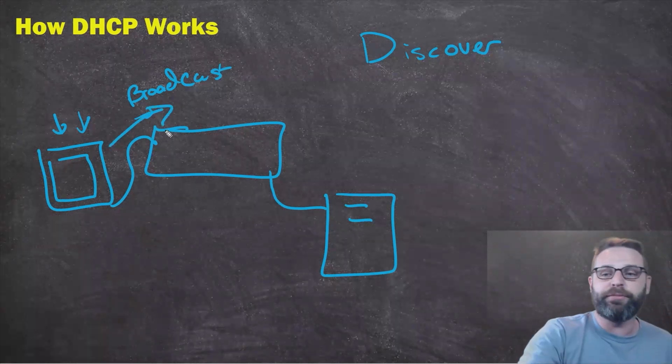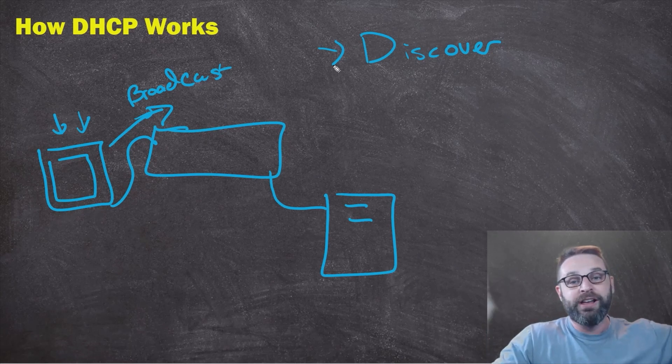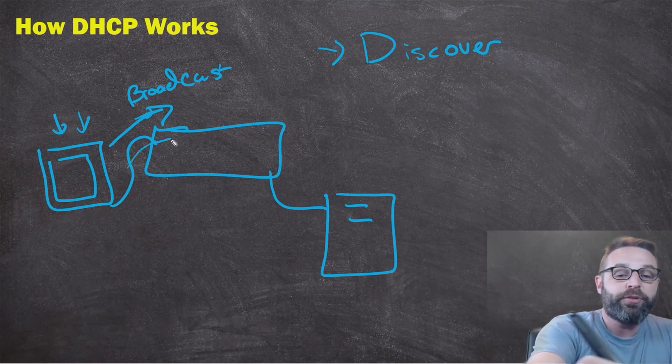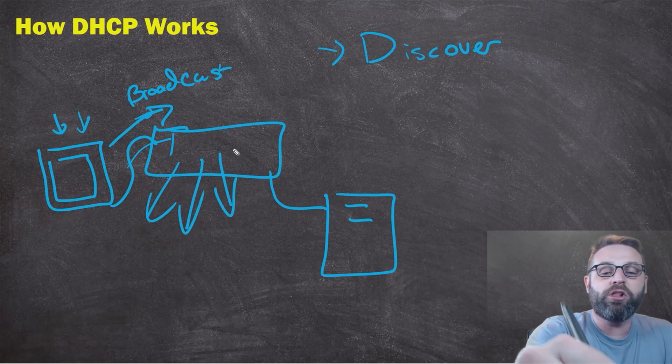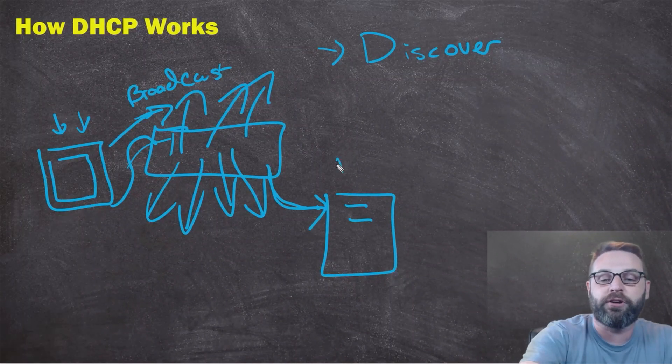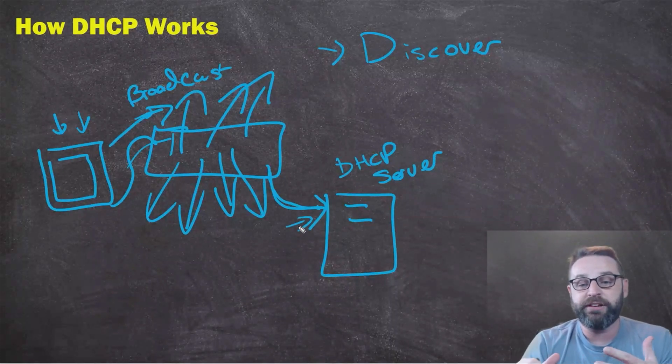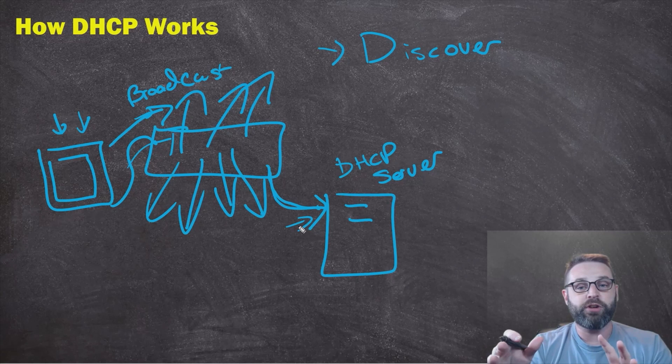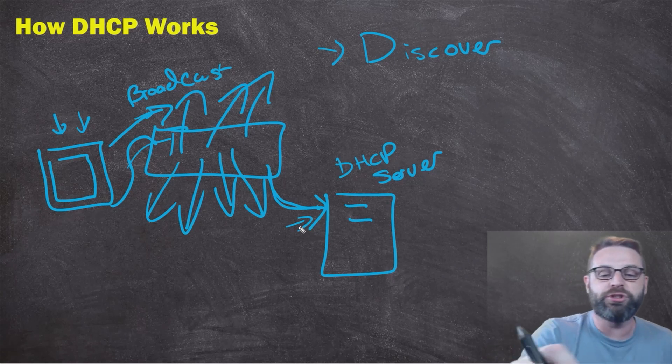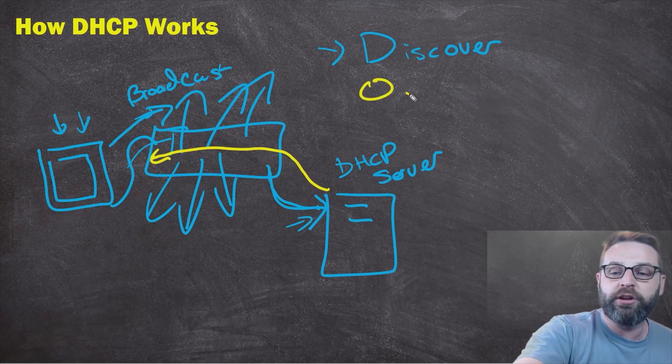So this broadcast comes in shouting out a discover message. This is a prepackaged, preformatted bit of data that says I'm looking for an IP address. So it comes into the switch and the switch floods it out all of the ports that are in the same VLAN, except the one it was received on. And that includes this port that the DHCP server is listening on. So this discover message comes in to the DHCP server and the DHCP server says, well, guess what? I speak the language of DHCP here.